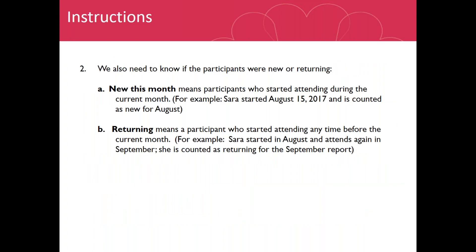We also want to get unduplicated counts. Each month when reporting attendance, we need to know if somebody is brand new to Kaleidoscope or a returning patron. A person who is new this month means participants who started attending during the current month — for example, if Sarah started attending August 15th, 2017, she would be counted as new for August. A returning person means a participant who started attending any time before the current month — so Sarah, who started in August, if she attends again in September, she's counted as returning in September and going forward.